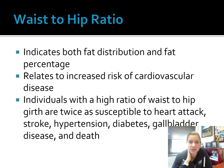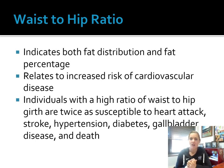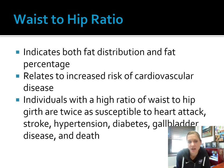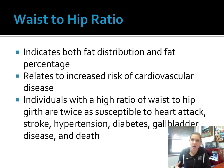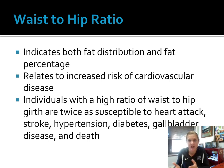Girth measurements do indicate both body fat percentage as well as fat distribution. It allows us to see if somebody is storing a lot of fat in their midsection — that abdominal fat puts us at a greater risk for heart attack, stroke, hypertension, diabetes, gallbladder disease, and death. When we think about fat distribution, this is an area where we're seeing more research into how fat is stored, where it's stored within the body, and how that makes a difference in terms of risk.